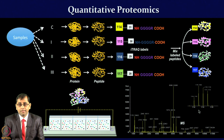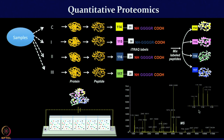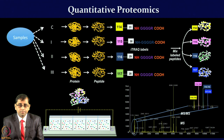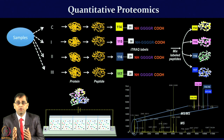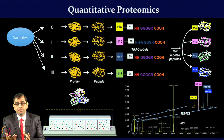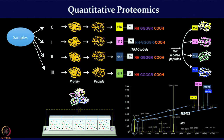One example uses isobaric tags known as iTRAQ — isobaric tag for relative and absolute quantification. In a simple situation comparing a control with three different grades of disease, all four conditions are labeled with four different iTRAQ labels generating reporter ions numbered 114 to 117. These reporter ions are analyzed in the mass spectrometer for peptide quantification and protein quantification.